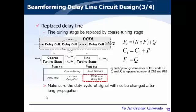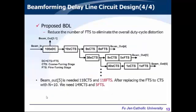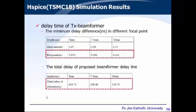The equation for this replacement is shown here. After adjusting the fine-tune and coarse-tune stages, we get a more stable beamforming delay line. Originally, the beamformer needed 185 fine-tune stages; after replacement, we reduce this to only 5 fine-tune stages. Our simulation results show both pre-layout and post-layout results. The minimum delay difference in our design is very close to the ideal case, as shown in the table, and the total delay range is also covered.